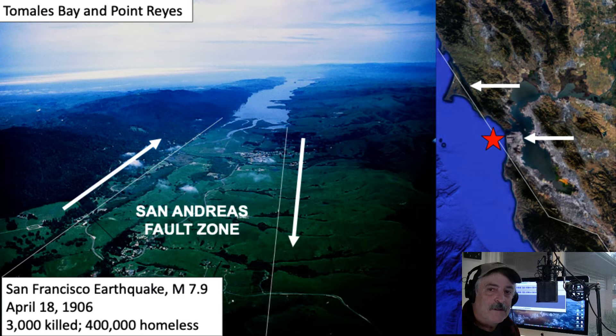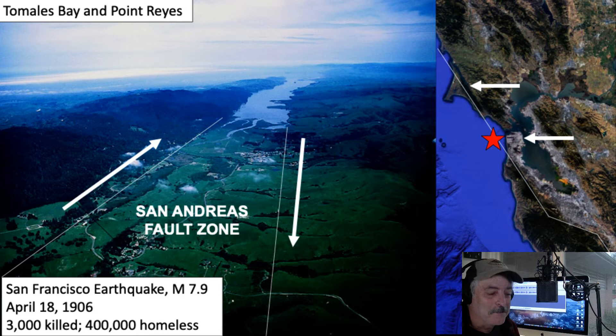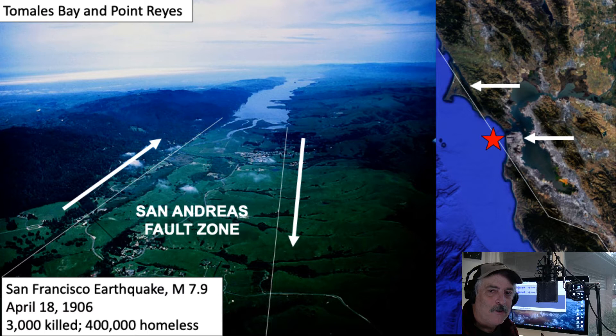The last super-major earthquake there was a 7.9 on April 18th, 1906. It was a populated place, but most of the people were not killed by buildings falling. San Francisco was one of the major cities hit, and most of the people died from the fires.